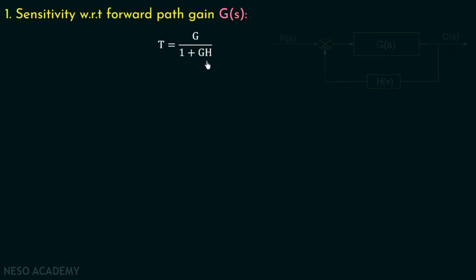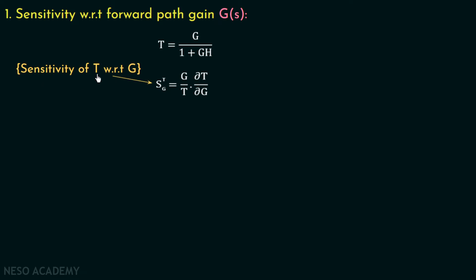The sensitivity of transfer function T with respect to forward path gain equals G over T multiplied with del T over del G. In this expression, S_T^G is the sensitivity of transfer function T with respect to G, and del T over del G is the derivative of the transfer function with respect to G, which is the forward path gain. We have the transfer function T equal to G over 1 plus GH.